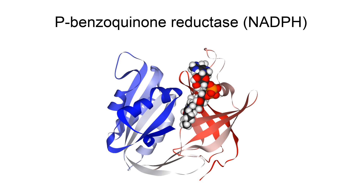NADPH plus H+ plus P-benzoquinone yields NADP+ plus hydroquinone. The three substrates of this enzyme are NADPH, H+, and P-benzoquinone, whereas its two products are NADP+ and hydroquinone.